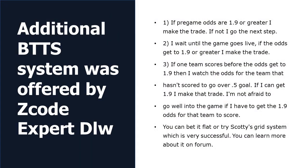An additional BTTS system was offered by ZCode expert DLW on the forum. He is looking for target odds of 1.90 or minus 110. Here is how he plays it: first, if pre-game odds are 1.90 or greater, he makes the trade. If not, he goes to step two — he waits until the game goes live, and if the odds get to 1.90 or greater, he makes the trade. For step three, if one team scores before the odds reach 1.90, he watches the odds for the team that hasn't scored to go 0.5 goals, and if he can get 1.90, he makes that trade.